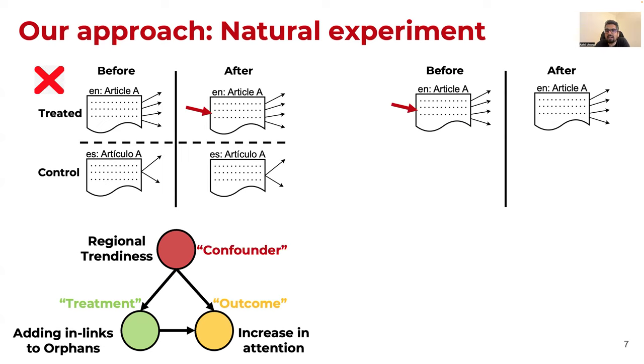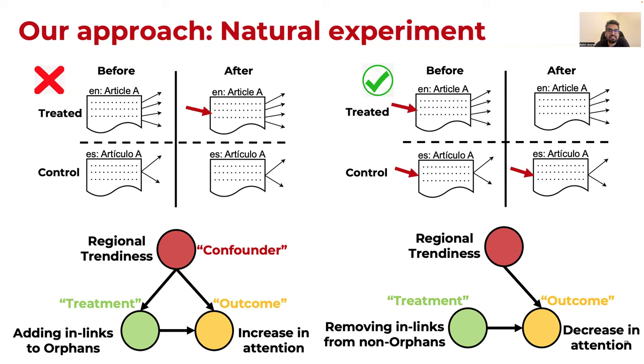We fix this by a clever strategy of inverting the treatment, where what we do is we find a non-orphan article that actually lost a link. As before, we find the same article, but in another language that remains a non-orphan. And I'll argue that here, a loss in trendiness won't motivate a human editor to modify a page and take the link away. And thus, this setup fixes the issue of regional trendiness, which is also indicated in the causal diagram here.